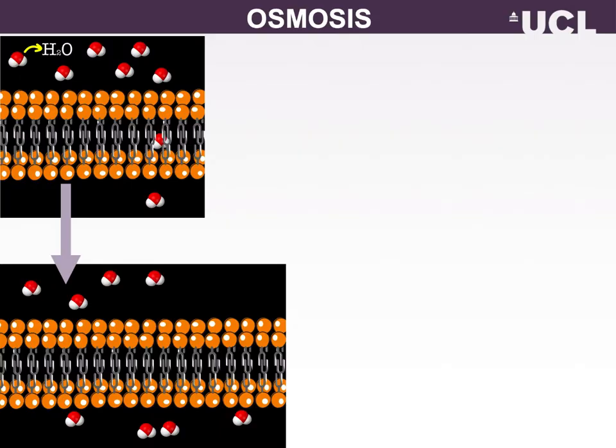Osmosis is a special type of diffusion, namely the diffusion of water across a semipermeable membrane. Water readily crosses a membrane down its potential gradient from high to low potential, as you can see from the figure on your slides. Osmotic pressure is the force required to prevent water molecules from moving across the semipermeable membrane. Net movement of water continues until its potential reaches zero.